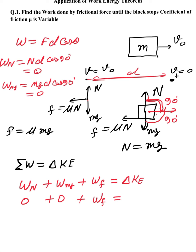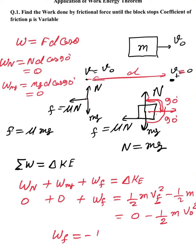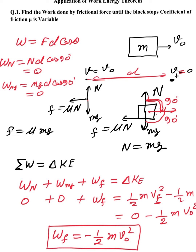So work done by friction equals the change in kinetic energy: final kinetic energy minus initial kinetic energy, which is half m times final velocity squared minus half m times initial velocity squared. Final velocity is zero according to the question — the block stops. So work done due to frictional force equals minus half m into v naught squared.